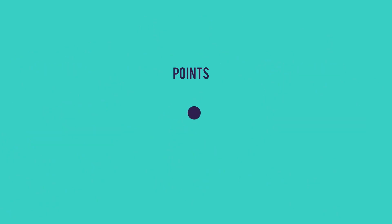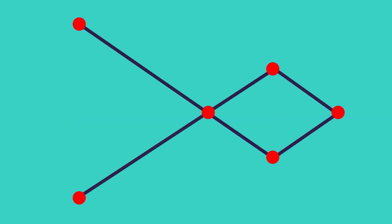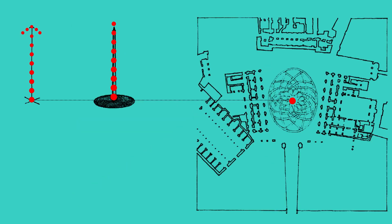A point is the prime element of form's construction. It can mark a position in space, define two ends of a line, the intersection between lines, and the center of a field or plane.